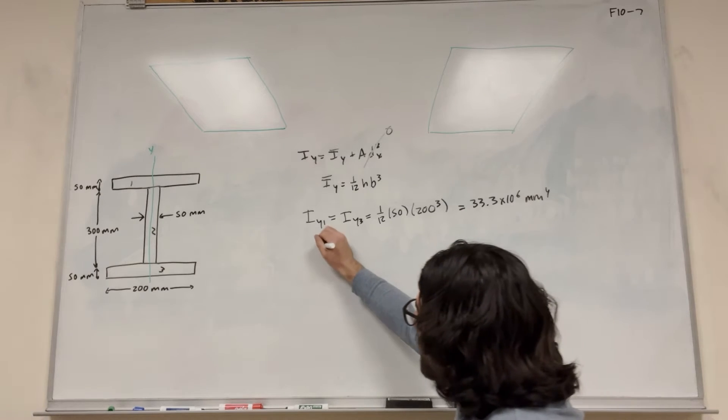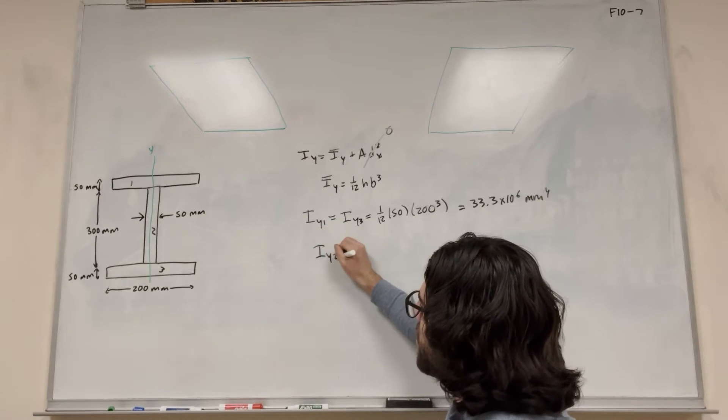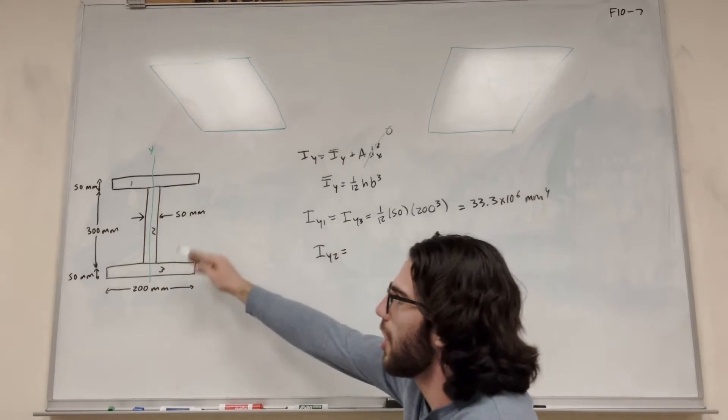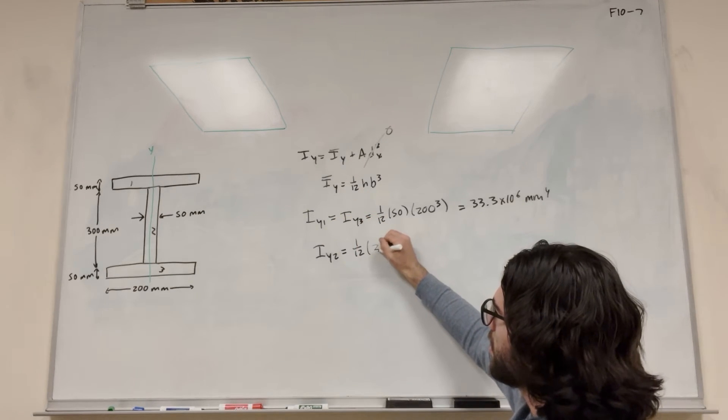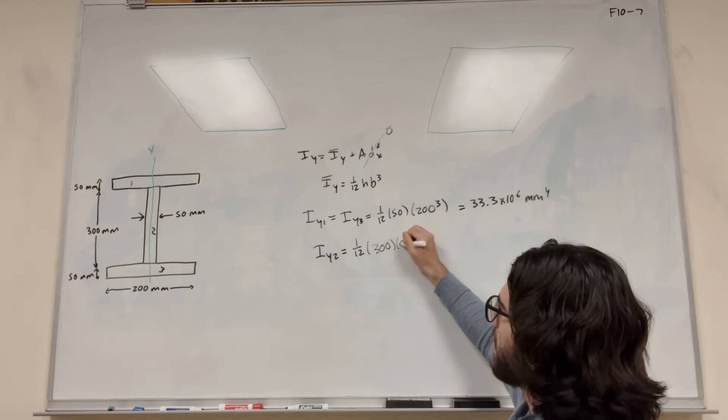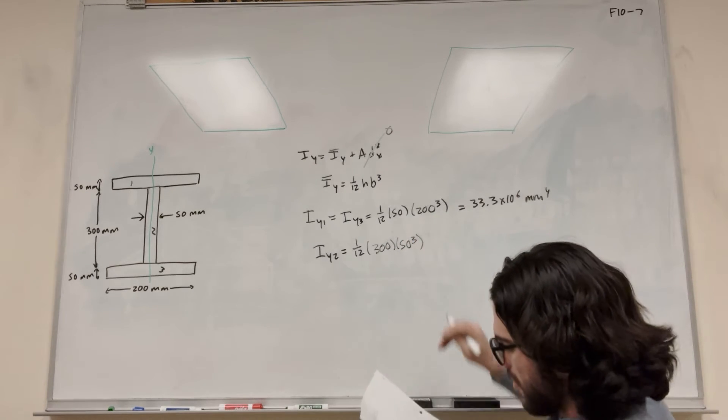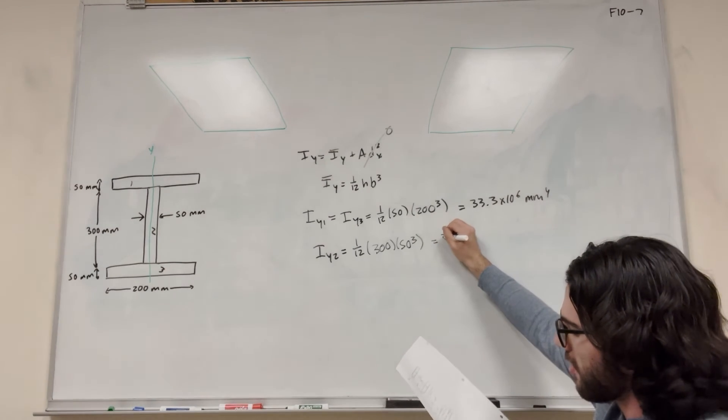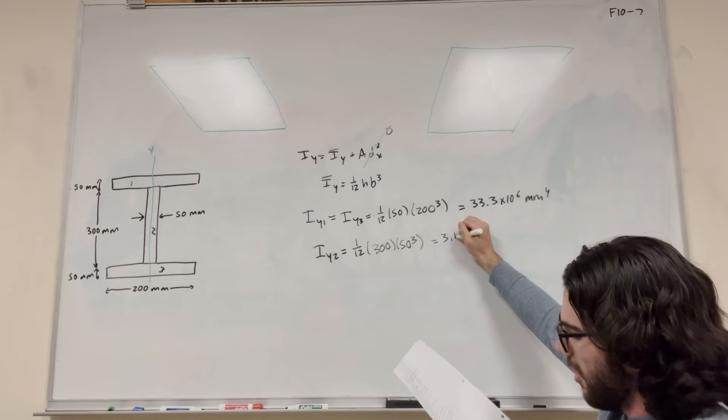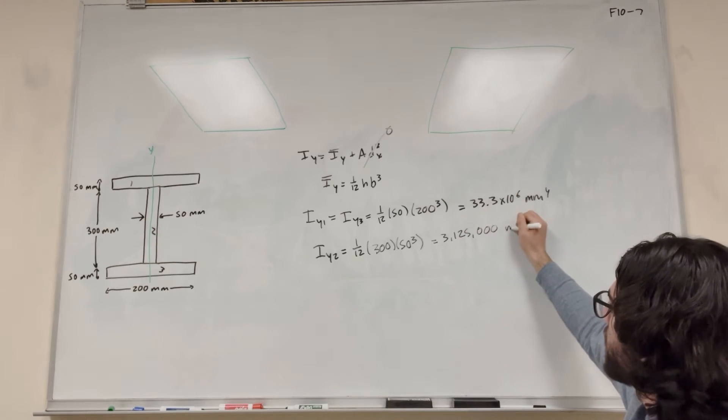Let's do the next part. So the moment of inertia around the y-axis for 2, this long beam, is going to be 1/12. Its height is 300, then its base is 50. So make sure to cube that 50. And this is equal to 3,125,000 millimeters to the fourth.